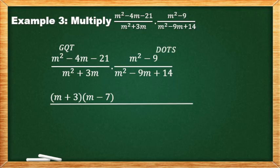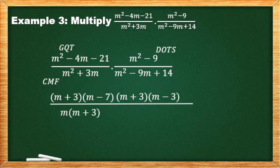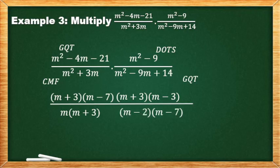Next one, dots — kasi perfect squares ang m² and 9. The square root of m² is m, the square root of 9 is 3. So, meron tayong (m+3)(m−3). Sa baba naman, CMF — m²+3m. May common factor ang m² and 3m: the smaller exponent of m is 1, so we have m×(m+3). Last, GQT ulit — what are the two numbers if we multiply to get positive 14 but when added gives −9? Since the product is positive, the two numbers have the same sign. Pero naging negative when added, so both are negative: −2 and −7. That's why we have (m−2)(m−7).